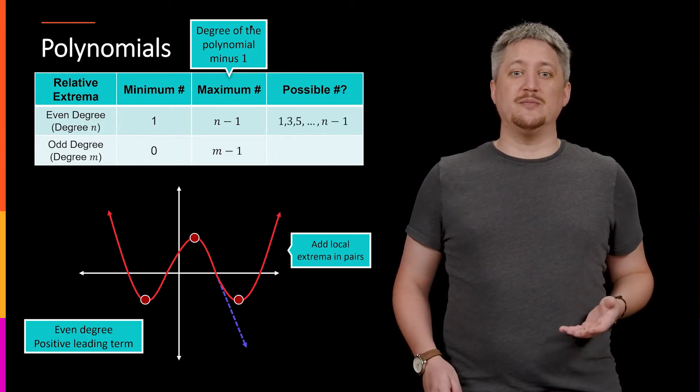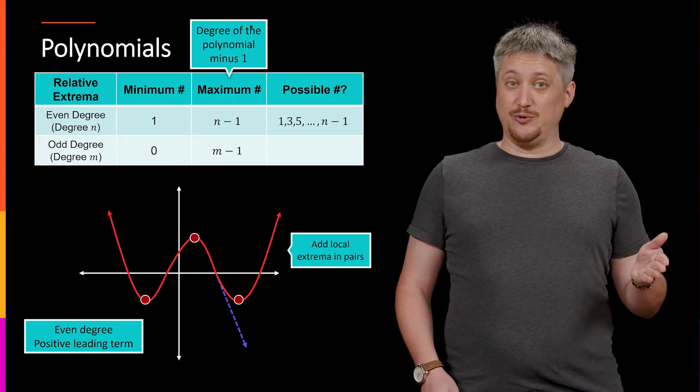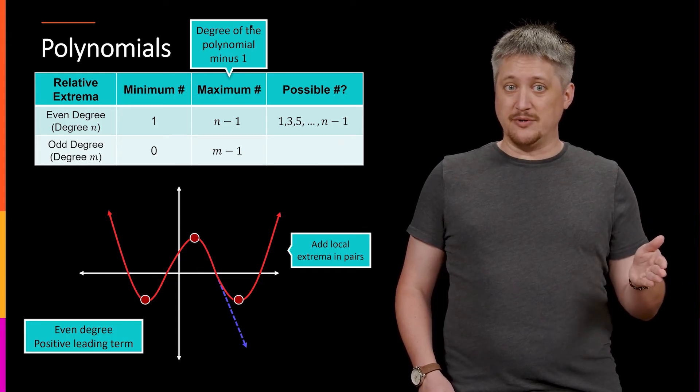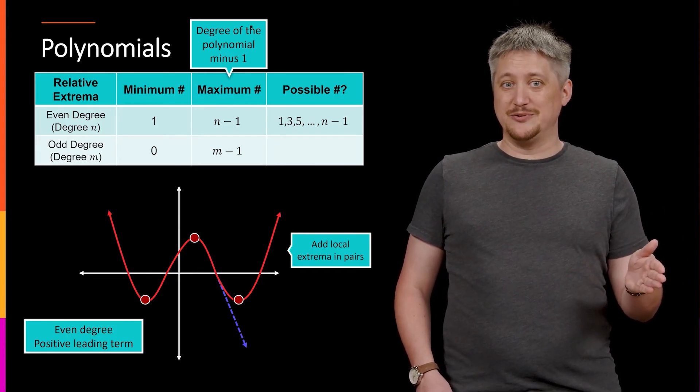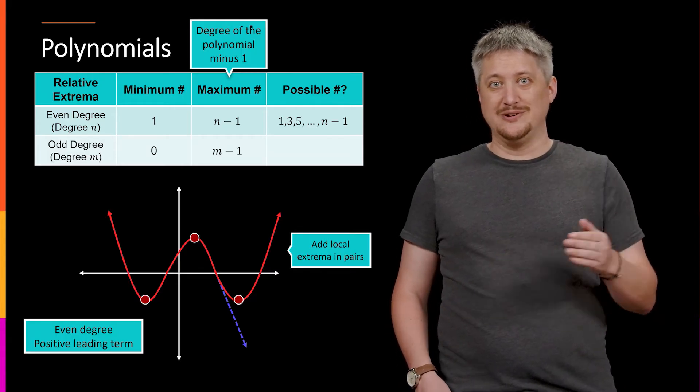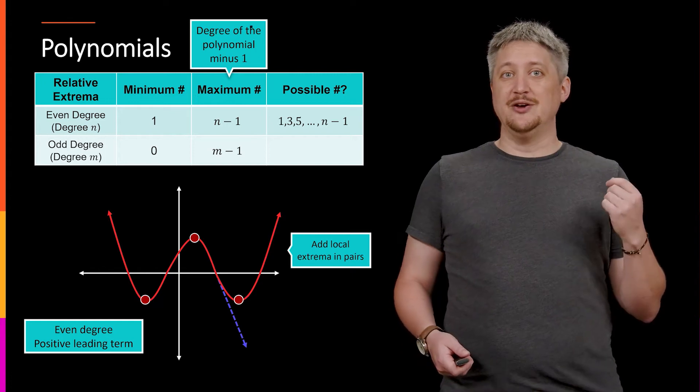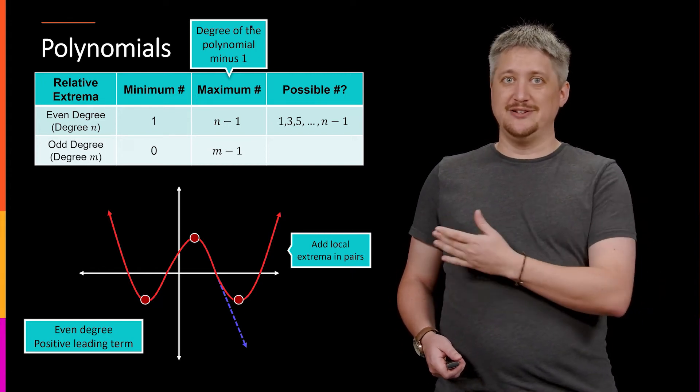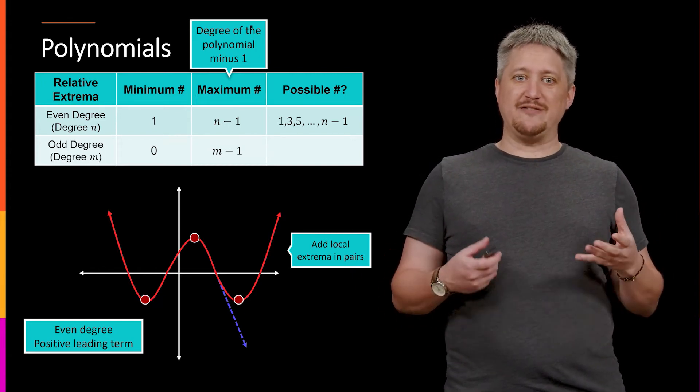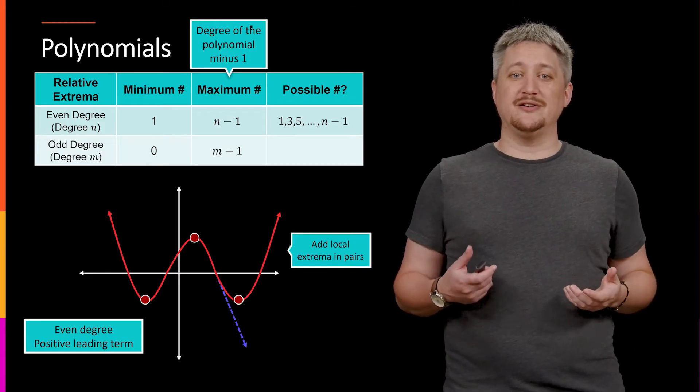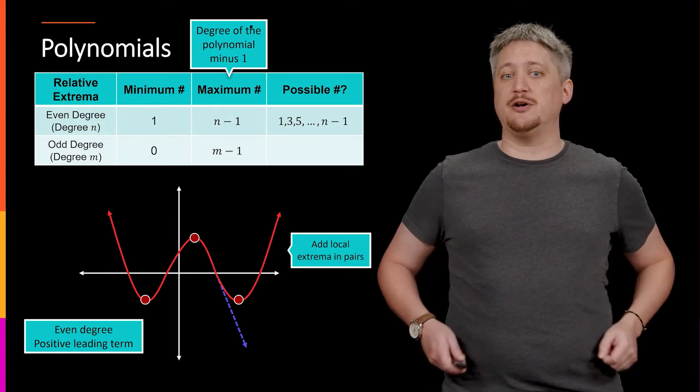meaning that the possible number really starts at one because they have a minimum of one, but then I can only have one, plus two, plus two, plus two. Those are the numbers I can have up to n minus one. So I can have one, three, five, seven, nine. I have to have an odd number of these local extrema if I have an even degree polynomial.